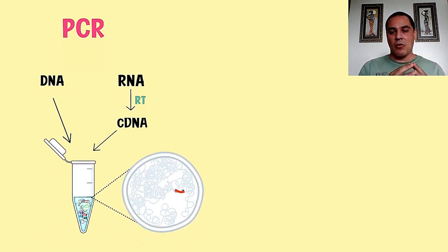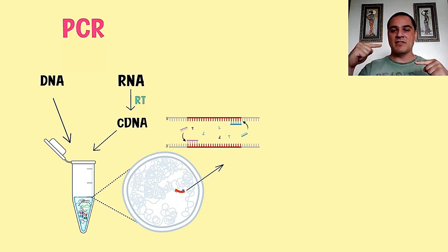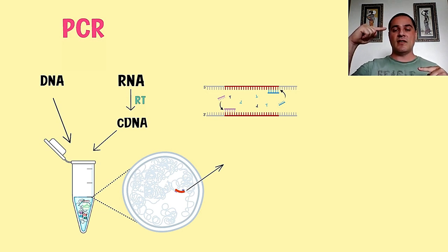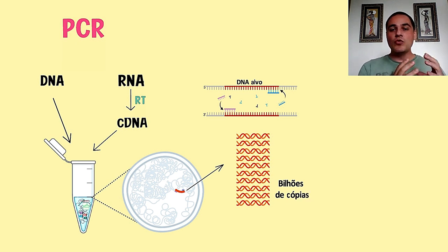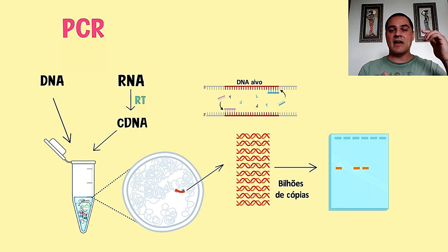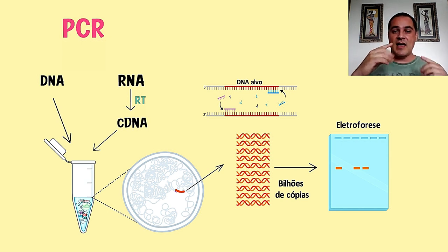Esse cDNA ou esse DNA que está na amostra vai ser amplificado a partir da presença de iniciadores ou primers que vão se ligar cada um numa fita desse DNA alvo e vão amplificar, com o auxílio da DNA polimerase, esse DNA alvo em milhões e milhões de cópias. E esse aumento no número de cópias é visível num gel de eletroforese — a gente migra esse DNA num gel e consegue ver o aparecimento ou não de bandas. Se o DNA alvo está presente, os primers vão reconhecer o DNA, vai ter amplificação e a gente vai ver o aparecimento de uma banda no gel.